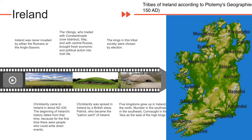Ireland was never invaded by either the Romans or the Anglo-Saxons. It was a land of monasteries and had a flourishing Celtic culture. As in Wales, people were known by the family grouping they belonged to. Outside their tribe, they had no protection and no name of their own — they had only the name of their tribe. The kings in this tribal society were chosen by election; the idea was that the strongest man should lead. In fact, the system led to continuous challenges.